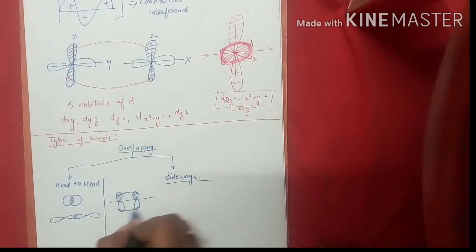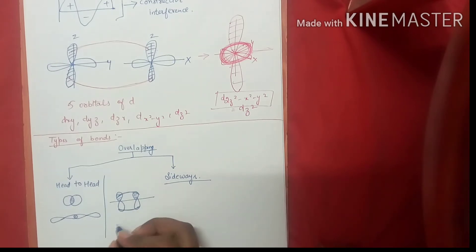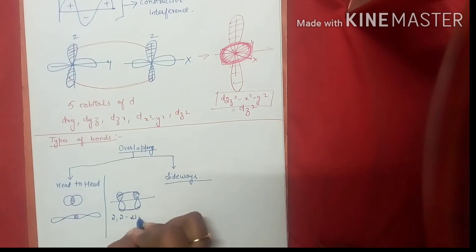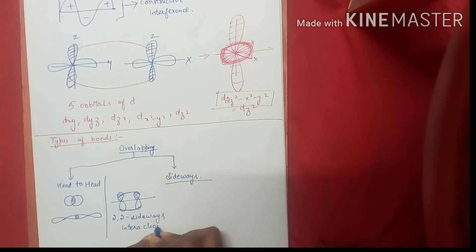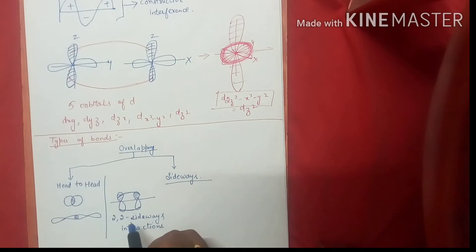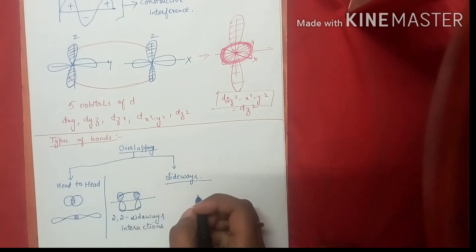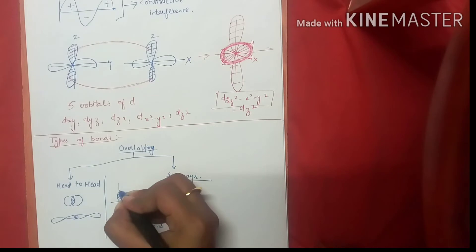There will be positive-positive and negative-negative phase interactions — these are called 2-2 sideways interactions. These interactions lead to the formation of your Pi bond.